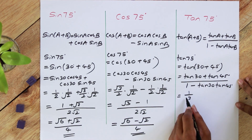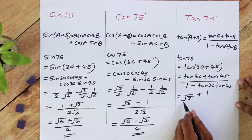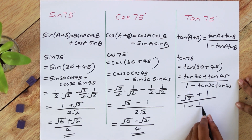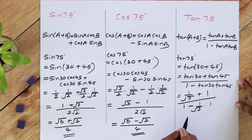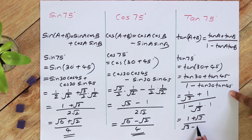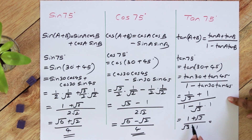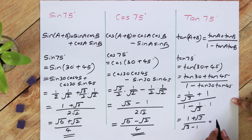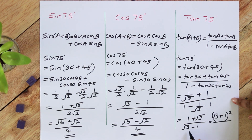So tan 30 is 1 over root 3, plus tan 45 is 1, over 1 minus tan 30 which is 1 over root 3 times tan 45 which is 1. Multiplying up and down by root 3, we get (1 plus root 3) over (root 3 minus 1). Then we multiply up and down by the conjugate of the denominator, which is root 3 plus 1, to rationalize. Up top it will be (root 3 plus 1) squared, and down it will be root 3 squared minus 1 squared.